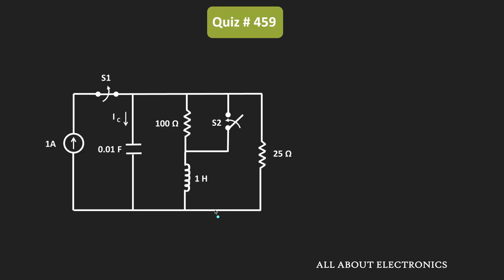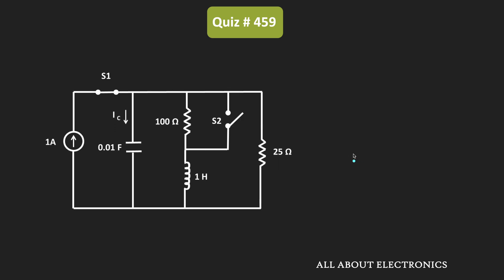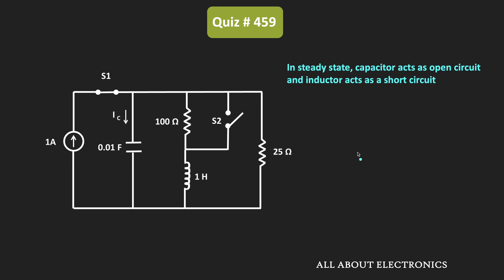Since switch S1 has been closed and S2 open for a long time, the circuit is in the steady state condition. In the steady state condition, the capacitor will act as an open circuit while the inductor will act as a short circuit. The circuit will remain in this same condition until t equals 0. So at t equals 0⁻, the capacitor acts as an open circuit and the inductor acts as a short circuit.